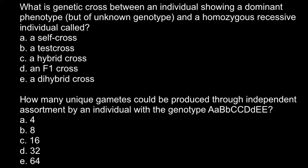Here is the first question: What is a genetic cross between an individual showing a dominant phenotype but unknown genotype and a homozygous recessive individual called? The five answer choices are: A) a self-cross, B) a test cross, C) a hybrid cross, D) an F1 cross, and E) a dihybrid cross.